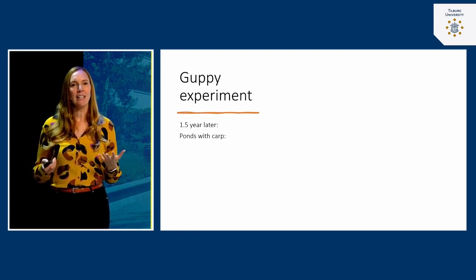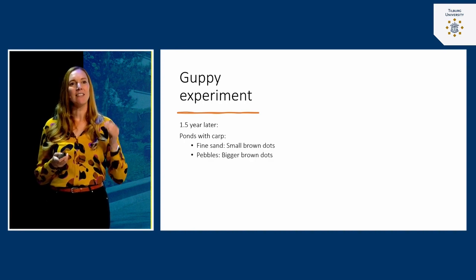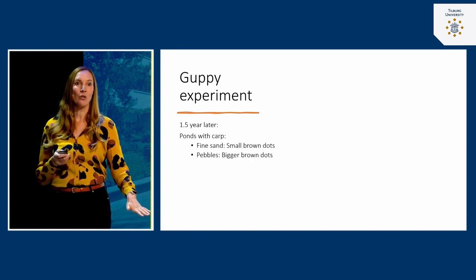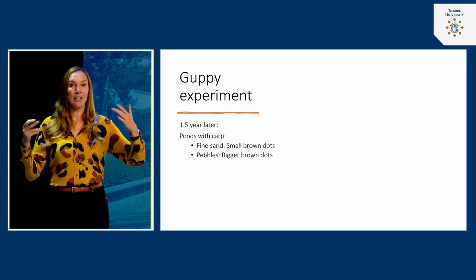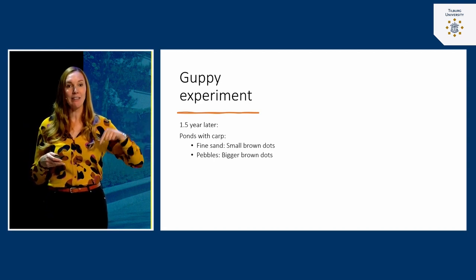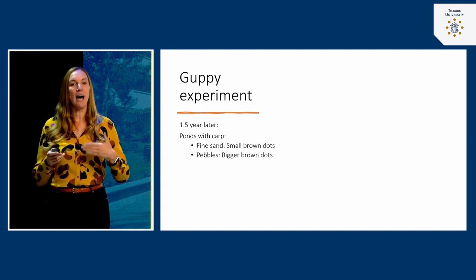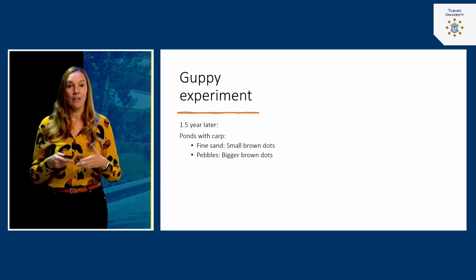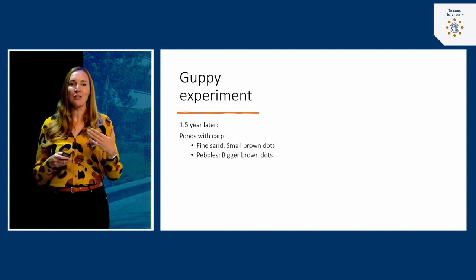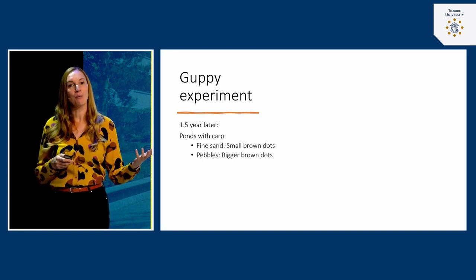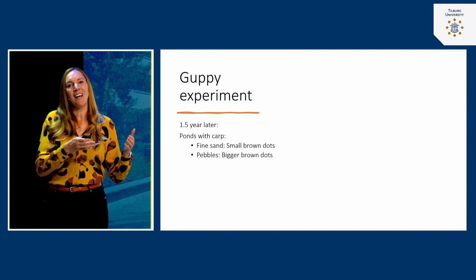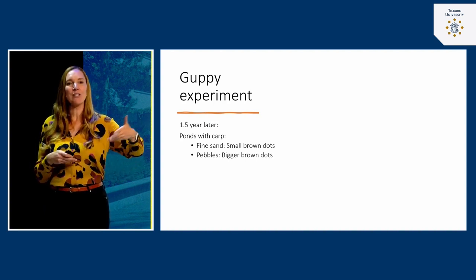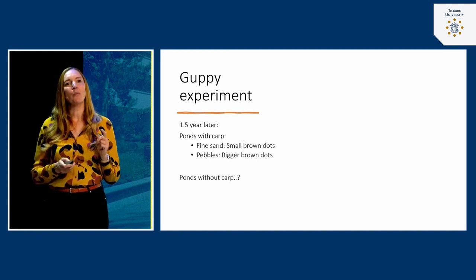In the ponds with the predator, the appearance of the guppies changed. In ponds with fine sand as soil, the guppies developed small brown dots; in ponds with pebbles, they developed bigger brown dots — camouflage. They created an appearance that made it harder for the carps to catch them. The guppies that happened to have an appearance serving as camouflage had a higher chance of staying alive, so this feature was passed on to future generations.